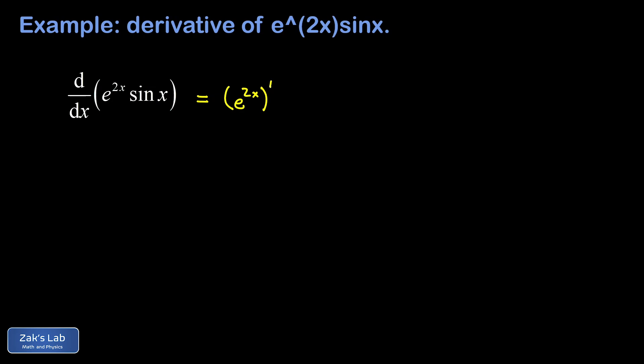The product rule says we're going to differentiate the first function, multiply that by the second function left alone, and then add to that the first function left alone times the derivative of the second function.